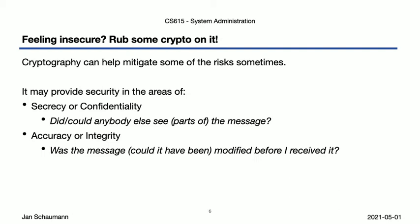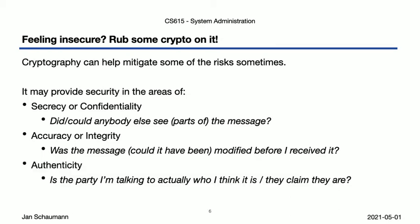Second, cryptography may help us assert accuracy or integrity, answering: was the message, or could it have been, modified before I received it? This is also really important, but different from secrecy. For example, if you issue a bank transaction, it really makes a difference whether it says you get $10 or $10,000, and this may be more important than assurance that nobody saw the value. Finally, the last area is authenticity: is the party I'm talking to actually who I think it is? So with these three broad areas in mind, let's see how cryptography might help mitigate some of the risks we've identified.